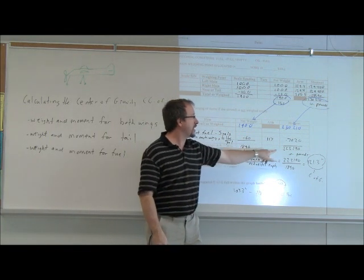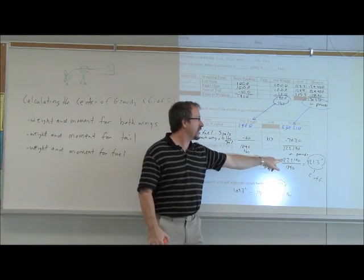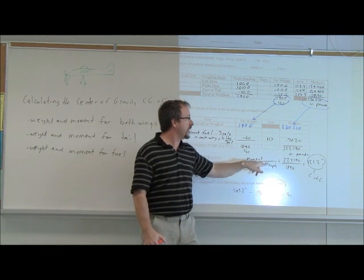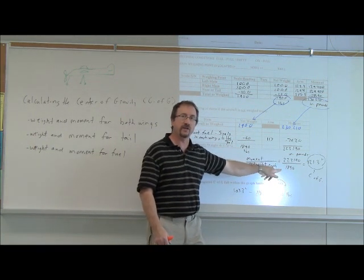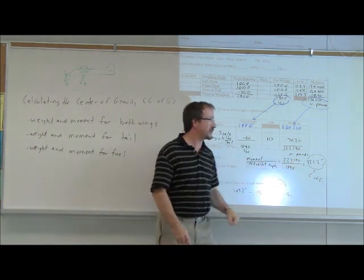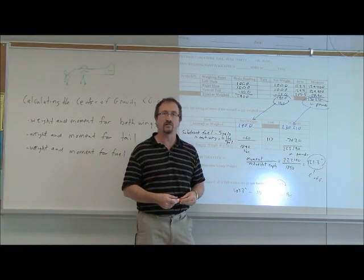To calculate the center of gravity, we take that net moment, 223,190, divide it by the net weight, 1,840 pounds. So, that's inch-pounds divided by pounds, will leave us with 121.3 inches as our center of gravity.